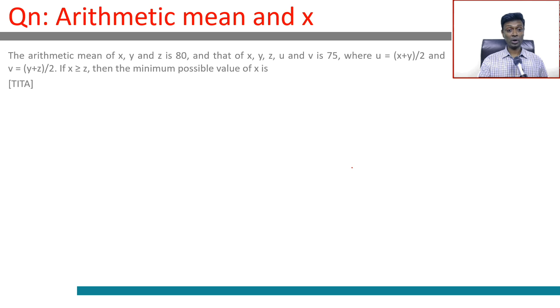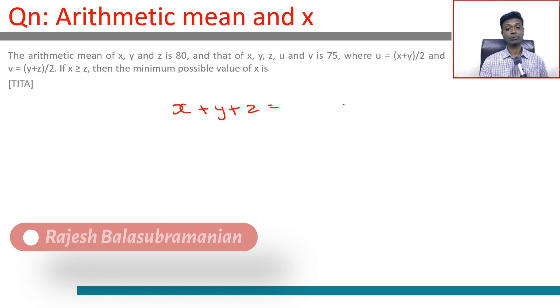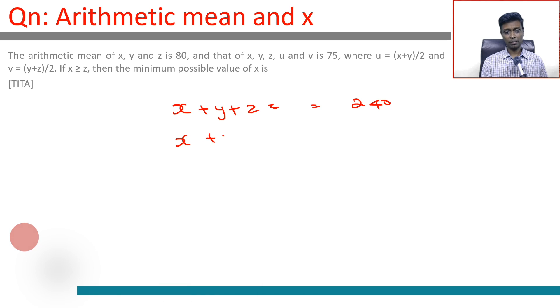The arithmetic mean of x, y, and z is 80, or x + y + z = 240. The arithmetic mean of x, y, z, u, and v is 75, so x + y + z + u + v = 75 × 5 = 375.